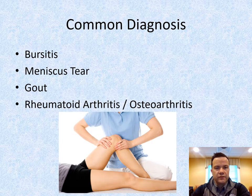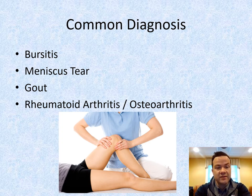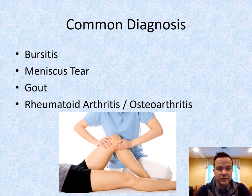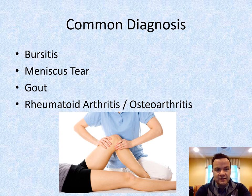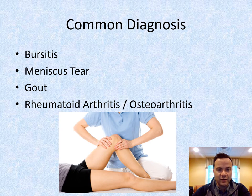What I want to go over with you today are the common diagnoses that I see here at the Village at Orchard Ridge. These are the most common that I see in my seven years here. The first we'll go over is bursitis, then we'll talk about meniscus tears, gout, and then our arthritic conditions.